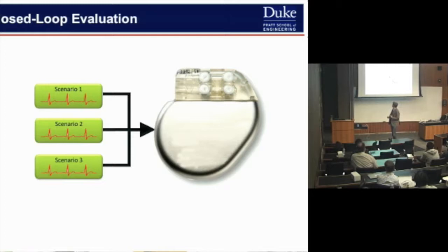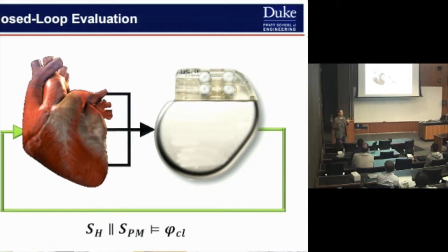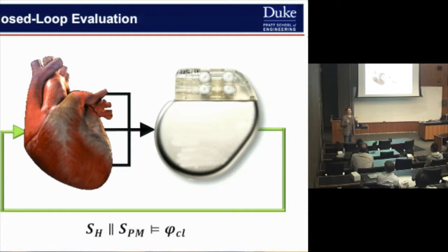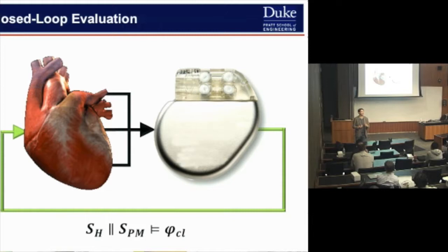So our idea is to move from open-loop to closed-loop testing. We don't have human hearts in our lab, but instead of that physical setup, we would like to use a model of the heart that is relevant to the algorithms we are considering. This is how we approach the modeling challenge that is very present in medical devices but also in other domains.